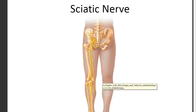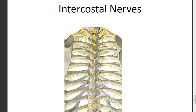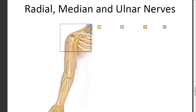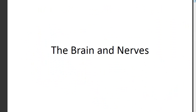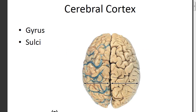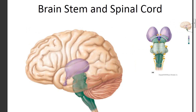Those are the structures you need to know for the brain and nerves — a relatively short lab. We'll be talking about the special senses next time. Be sure you review these and color in the diagrams on page 36, and you should be good to go. That concludes our discussion today.